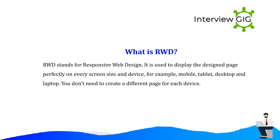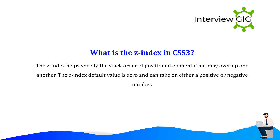What is RWD? RWD stands for responsive web design. It is used to display the design page perfectly on every screen size and device — for example, mobile, tablet, desktop, and laptop. You don't need to create a different page for each device. What is the Z-index in CSS3? The Z-index helps specify the stack order of positioned elements that may overlap one another. The Z-index default value is zero and can take on either a positive or negative number.